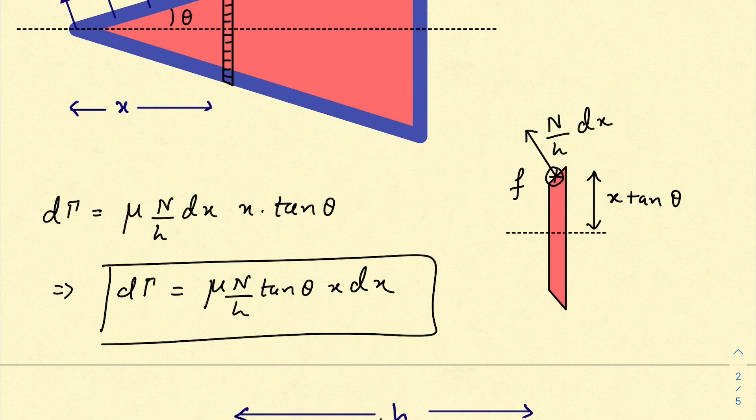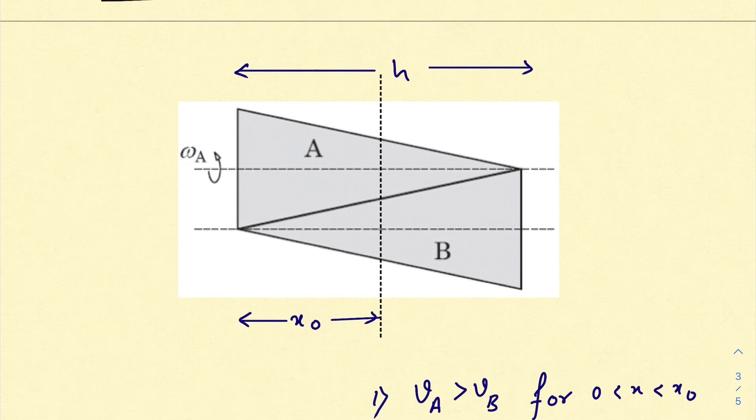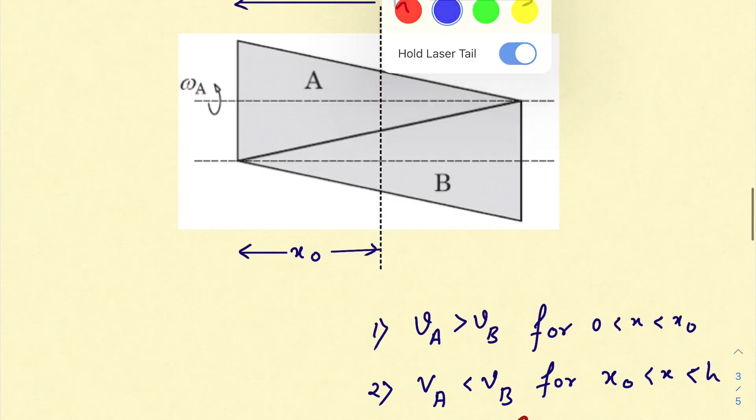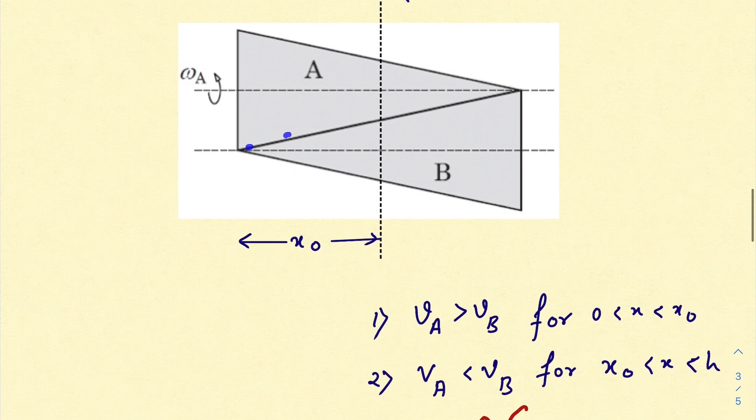So that frictional force would be μ times (N/h) dx times this length, which is x tan θ. So torque due to that infinitesimally small frictional force would be this one. If we try to analyze the situation once again, we see that as we move towards right, the velocity for B is increasing, for A it is decreasing.